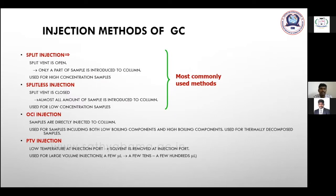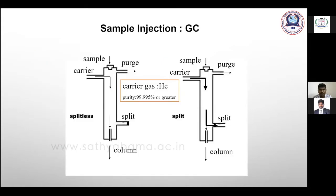There are different injection methods in GC: split injection, splitless injection, on-column injection, and PTV injection. Most publications mention split or splitless injection. In split injection, the split vent is open. In splitless injection, the split vent is closed. When injecting concentrated samples of more than 10 ppm, you use split injection. If injecting pure compounds, you use splitless injection.